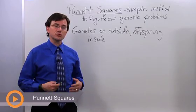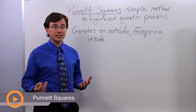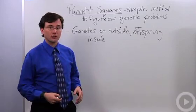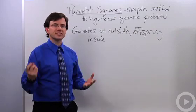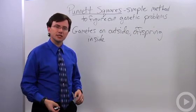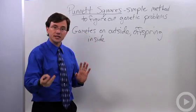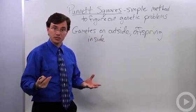In genetics, one of the most useful tools that you'll find is what's known as a Punnett square, which is simply a graphical way of helping you figure out genetic problems. Once you've seen how to do them, Punnett squares are pretty easy. But the key thing to keep in mind is that the gametes of the parents that you're going to be investigating go on the outside of the Punnett square,